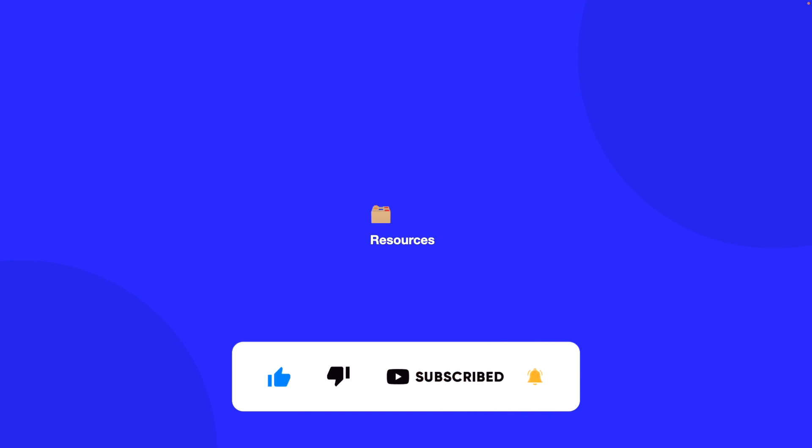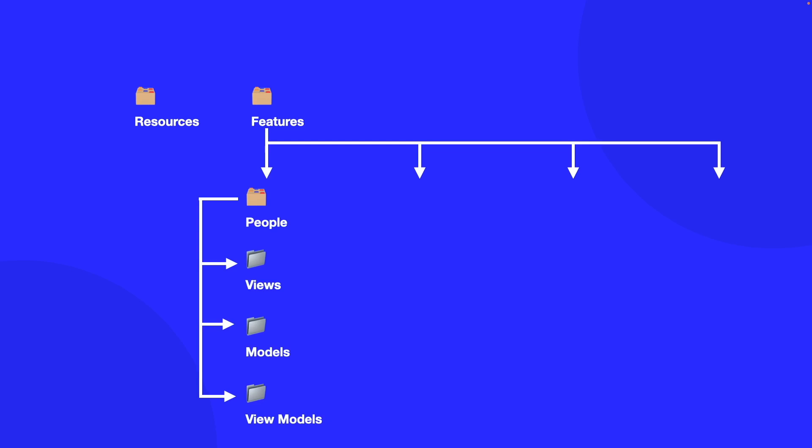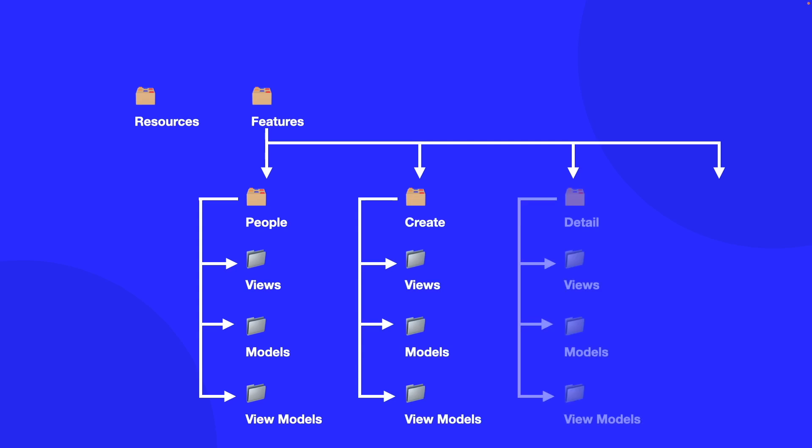If you look at the mock-up I showed in a previous video, you'll see we had quite a few different designs. I want to look at each one of the screens as features. Think about a feature as a single isolated component — we only want to group relevant files by their features. So first, we want to have a root folder called features, which will house everything relating to the screens in our mock-up. Starting with our people view, we create a folder called people, and within people we organize it with folders called views, models, and view models. Then we have the create screen, and also the detail screen.